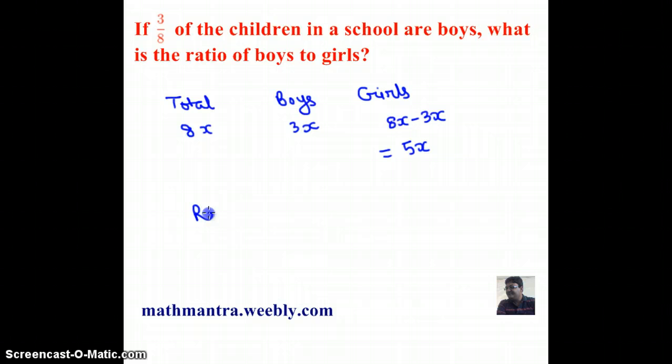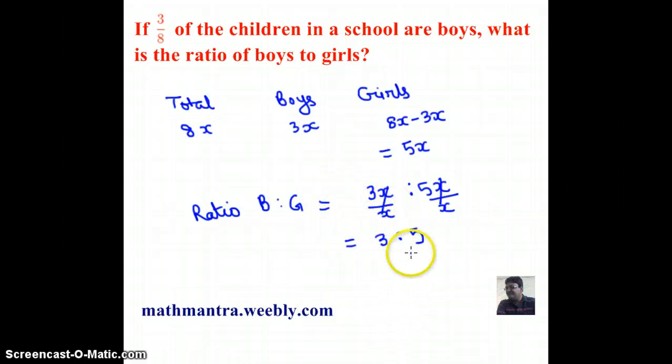Now ratio of boys to girls means I need to get 3x is to 5x. So I need to cancel the common factor and here the common factor is x in both cases. So the common factor is cancelled and I get 3 is to 5. So the ratio of boys to girls is 3 is to 5.